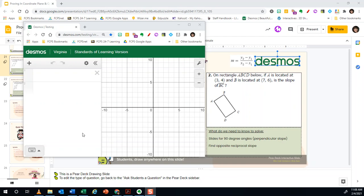Hi guys, I'm going to show you how to make a line from a table so that you can calculate or find the slope of the line. We have been given a problem where on rectangle ABC, if A is located at 3,4 and B is located at 7,6, we're trying to find the slope of the perpendicular side BC.